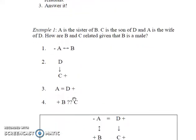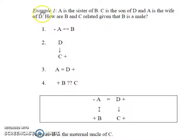Let us see this with an example. Suppose A is the sister of B, C is the son of D and A is the wife of D. We need to find out how B and C are related to each other given that B is a male. So let's solve this question piece by piece. First, A is the sister of B, so A is a female, hence minus sign here and this double arrow denoting the sibling relationship.